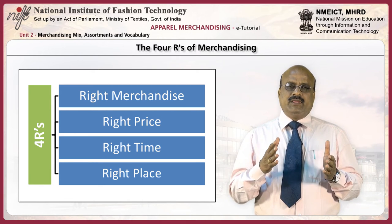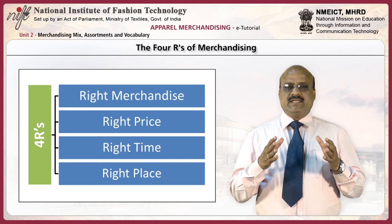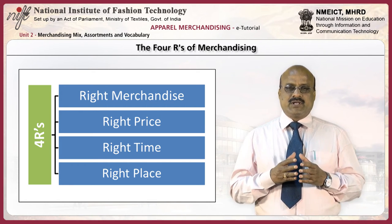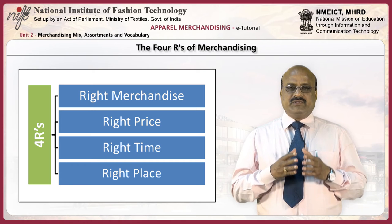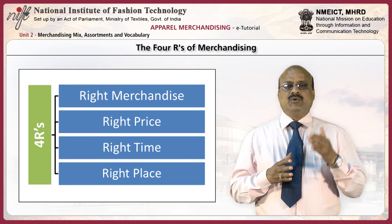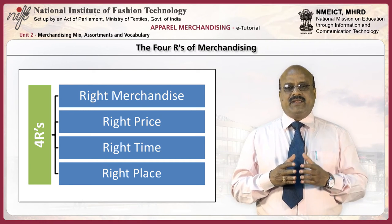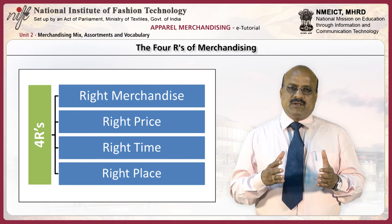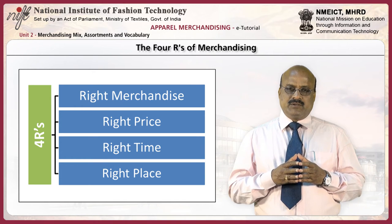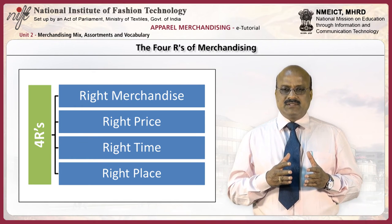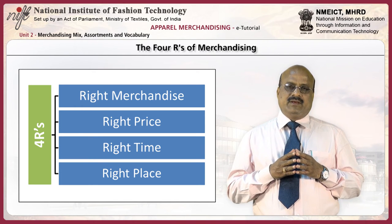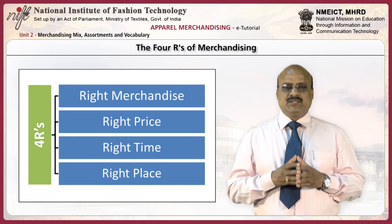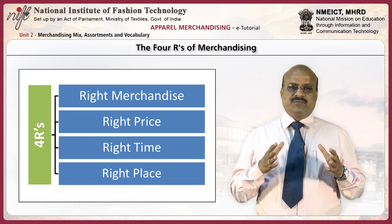To put it simply, fashion merchandising is the art and science of making the right product, at the right price, available at the right place, at the right time. So, the four R's are: one, right product; two, right price; three, right time; and four, right place. These are known as the 4 R's of Merchandising.